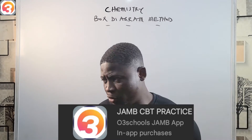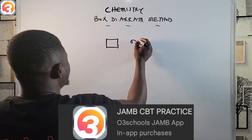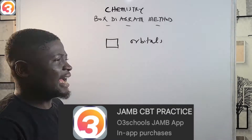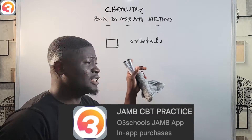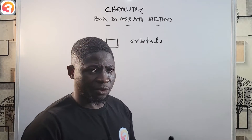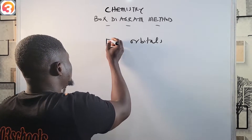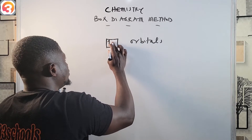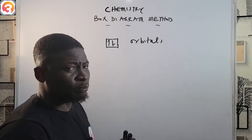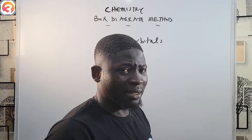In the box diagram method, we use boxes to represent orbitals and electrons are drawn in them as arrows. The boxes represent the orbitals and the arrows represent the electrons. Within each box there are usually two arrows — one facing upward and one facing downward — to portray that their spins are opposite.